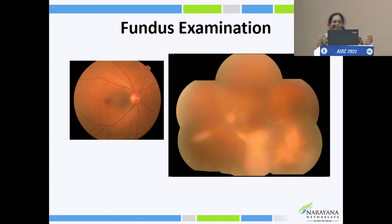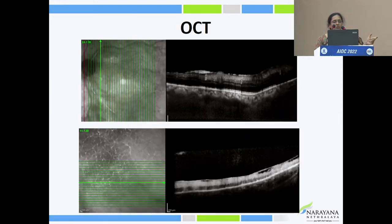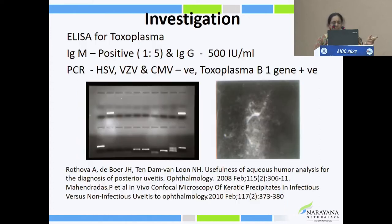At this point, since the patient showed worsening with retinitis and arteriolitis, we thought could it be toxo? OCT showed EIRM with hyperreflectivity of the vessel corresponding to the sclerosed vessel with retinitis. Serological titer was strongly positive — IgG was 500 IU/mL. AC tap PCR came positive for Toxoplasma B1 gene.